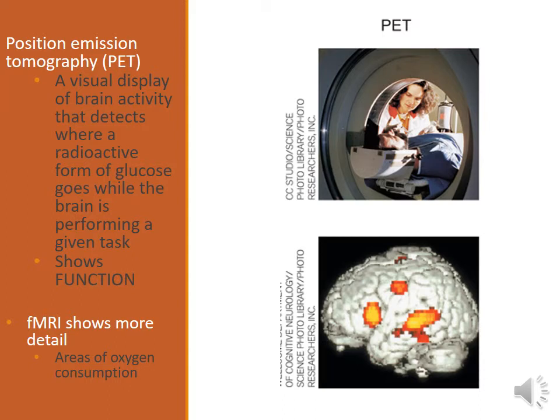A PET scan has the person take in a radioactive form of glucose. As the glucose travels through their body via their bloodstream, the areas of the brain consuming the most energy are the most active. Therefore, the PET scan picks up where the glucose consolidates and reads all of that radioactive material, giving a color-coded map of areas that are highly active and less active. An fMRI does this differently — it doesn't use x-rays, and it uses oxygen consumption and the same principles as an MRI.